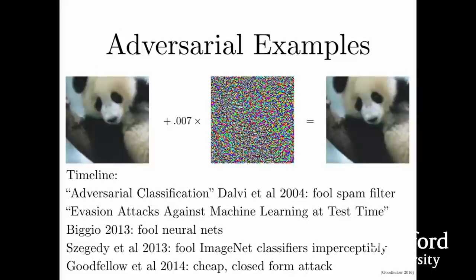An adversarial example is an example that has been carefully computed to be misclassified. In many cases we're able to make the new image indistinguishable to a human observer from the original image. Here I show you one where we start with a panda—on the left, this is a panda that has not been modified in any way, and a convolutional network trained on the ImageNet dataset is able to recognize it as a panda, though with only about 60% probability.